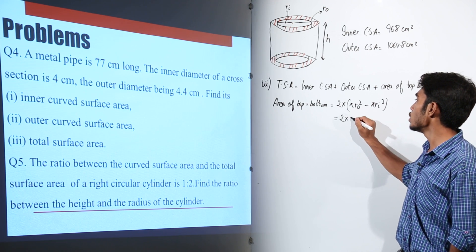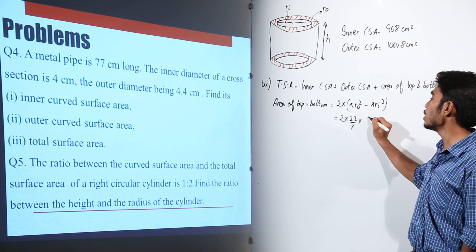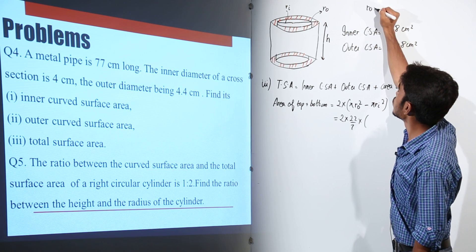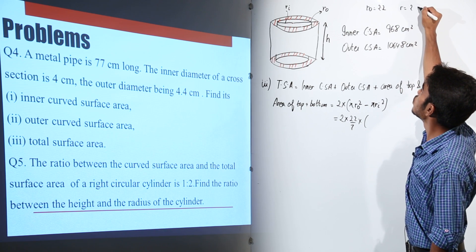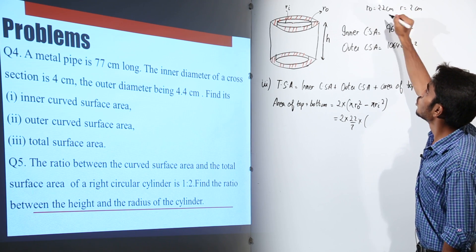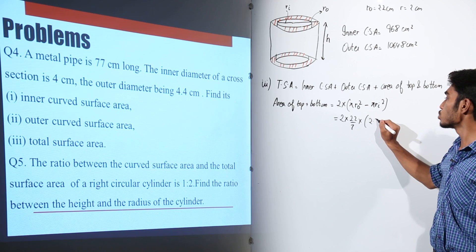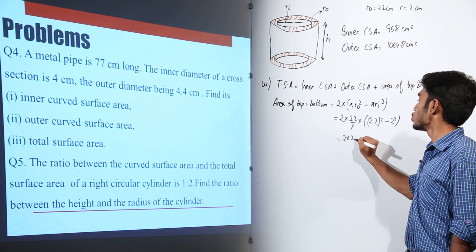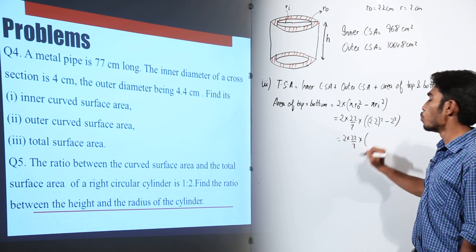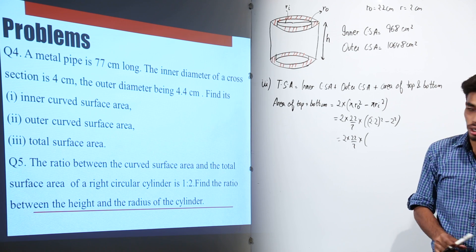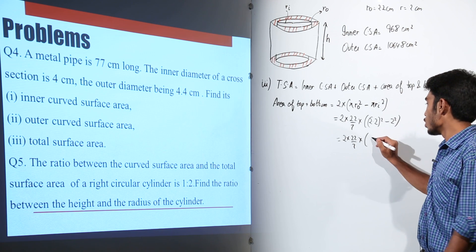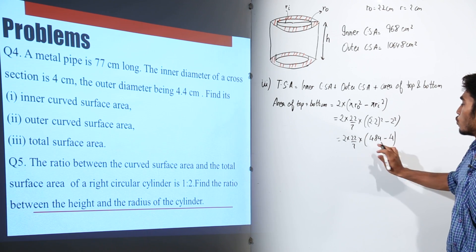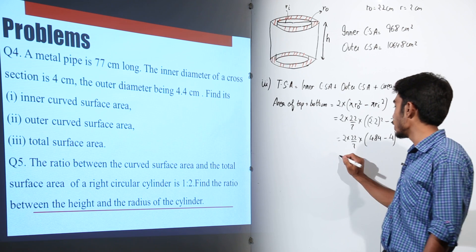Taking π as common and writing it as 22/7, we have r0 = 2.2 cm and ri = 2 cm. So we need 2.2² minus 2². Now, 2.2² is 4.84 and 2² is 4, so 4.84 minus 4 equals 0.84.